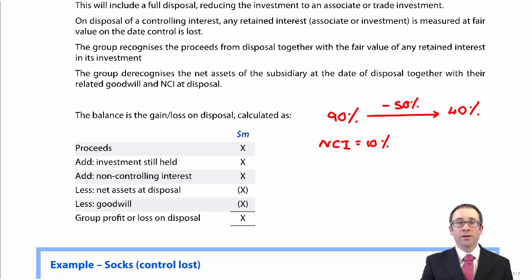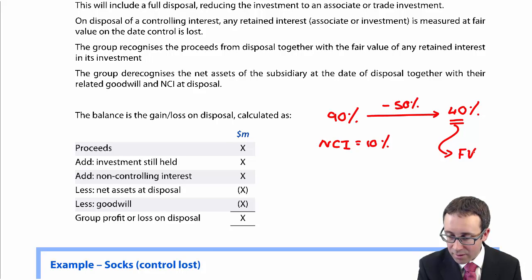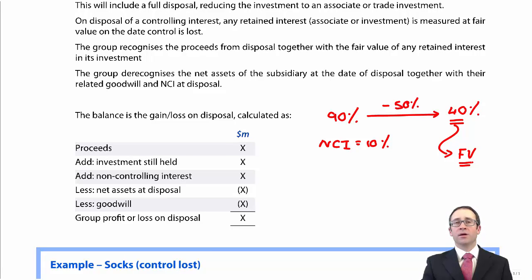We need to remove all the net assets because we no longer consolidate those net assets. We also need to remove the goodwill because there is now no longer any goodwill as it has been disposed of. And what we end up with is we look at our 40% holding. We need to make sure that 40% holding that we still have is valued at fair value.